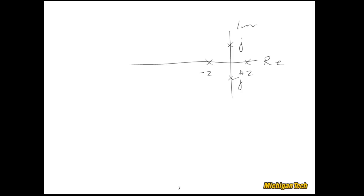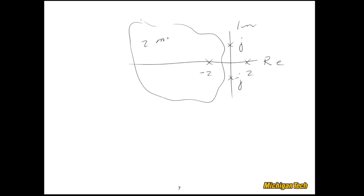Since we know there is only one pole in the right half plane and we've now solved all the poles from the auxiliary equation, we know that the remaining two poles — because it was a sixth order characteristic equation — are somewhere in the left half plane.